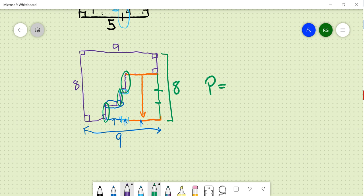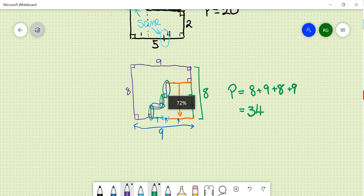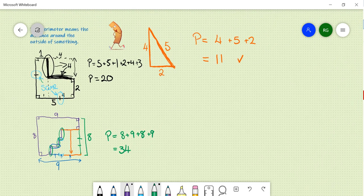Therefore, we can work out that the perimeter of this is eight plus nine, plus eight, plus nine, which is equal to 34 meters. So enough information has been provided there.